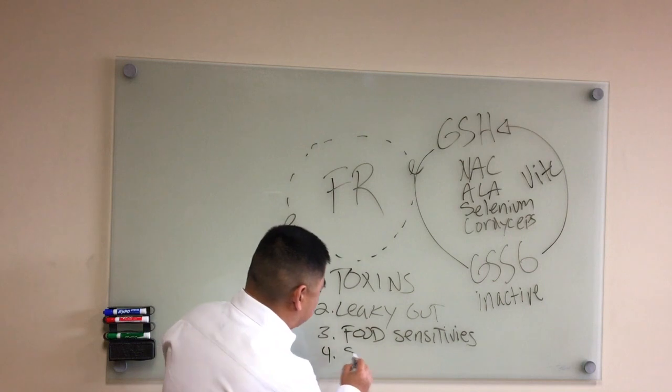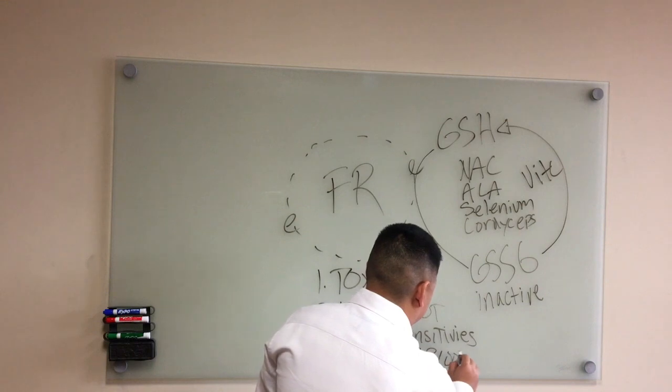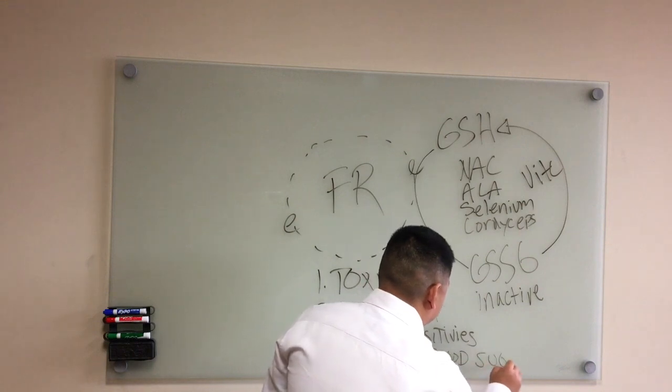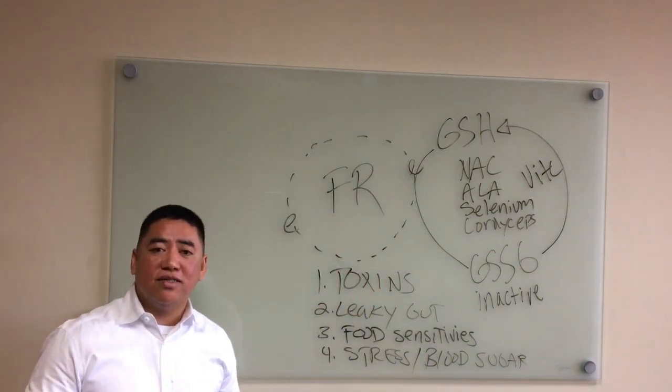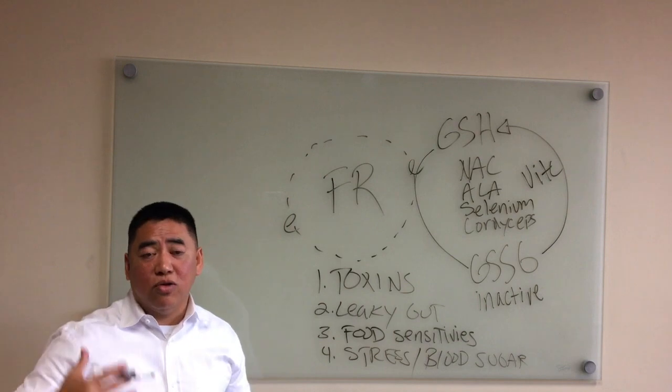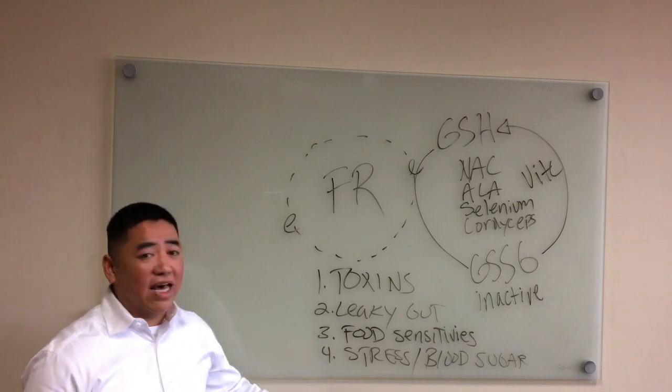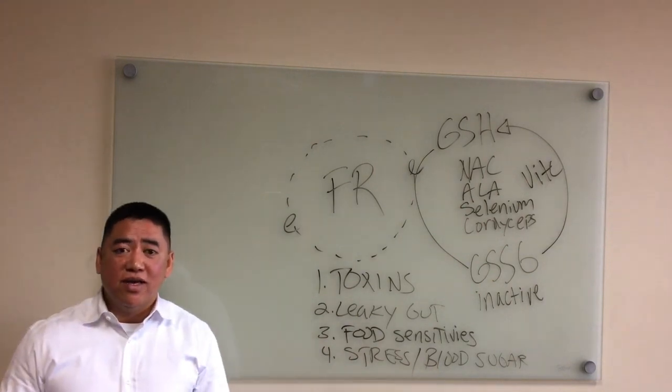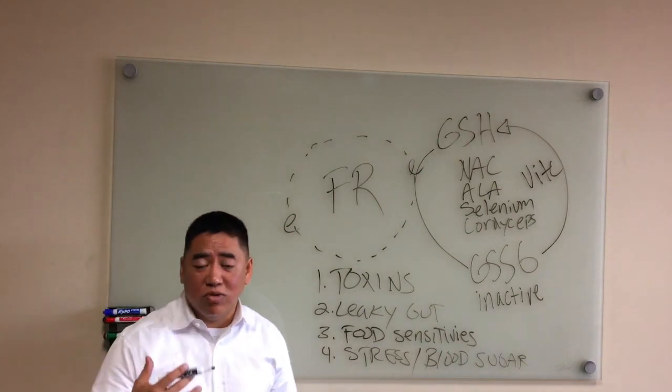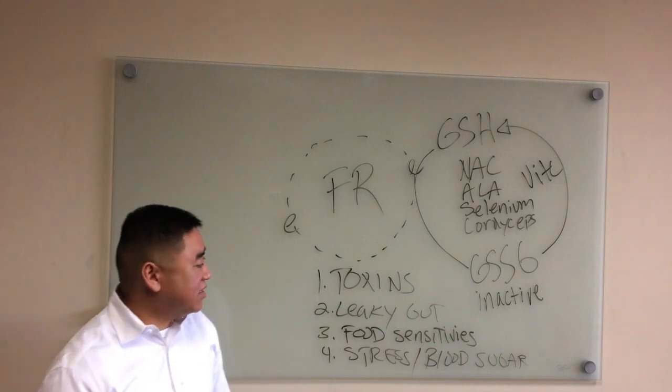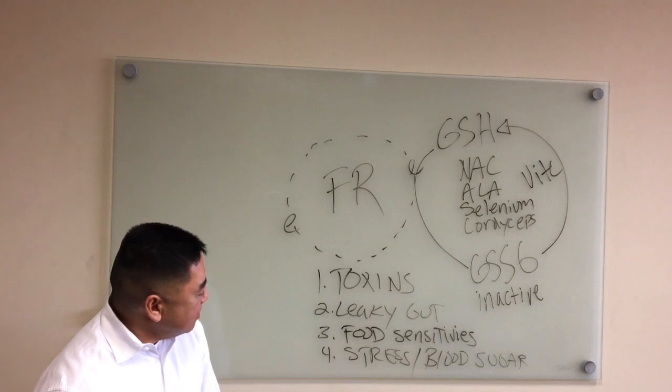Number four that goes along with this is stress and blood sugar. Stress is one of those things that's going to constantly create cortisol or rises in cortisol levels, and basically it never goes down, and that has an effect on your blood sugar as well in terms of the insulin and insulin receptor responses, and it may create an issue with hypoglycemia or an issue with insulin resistance.